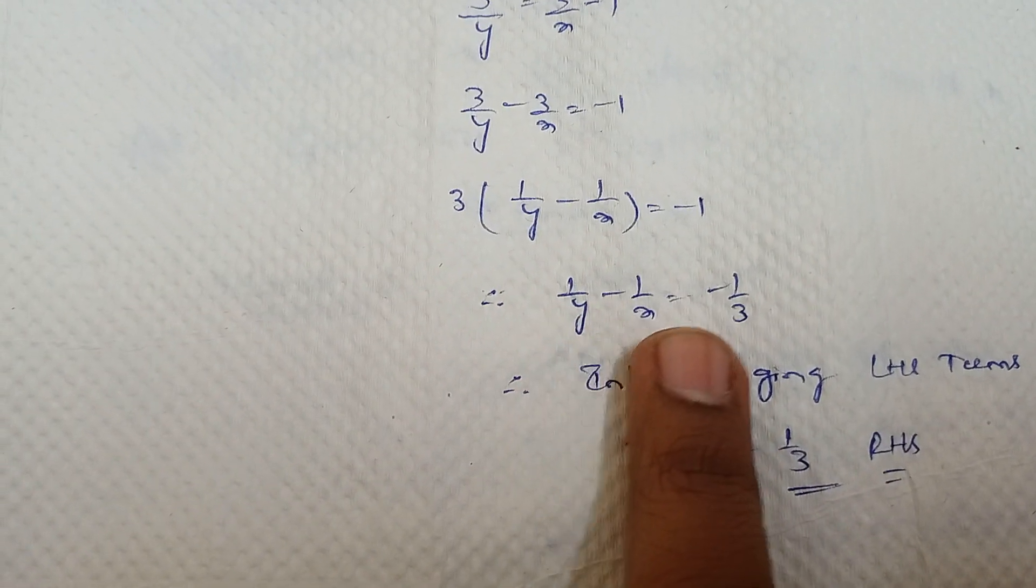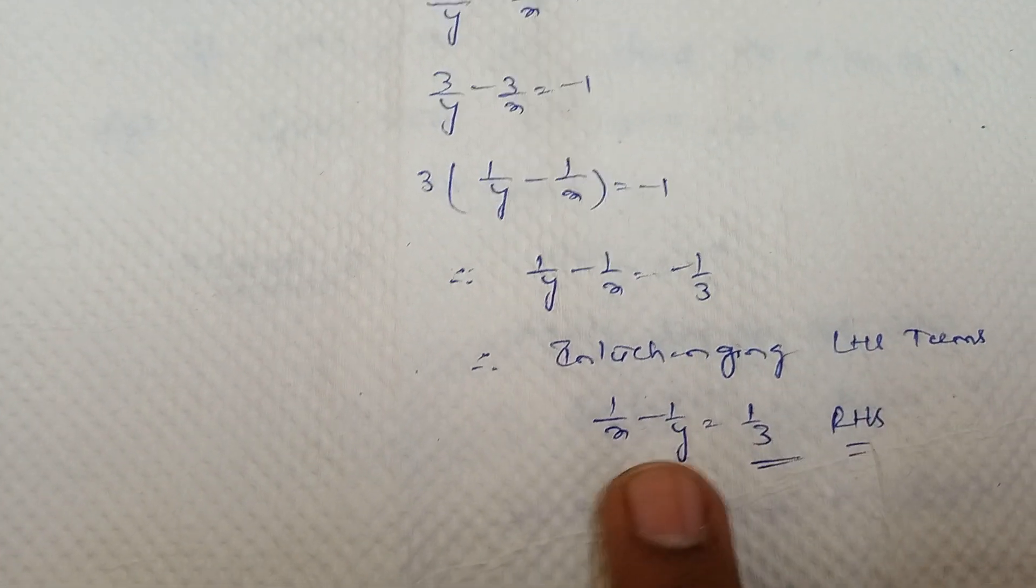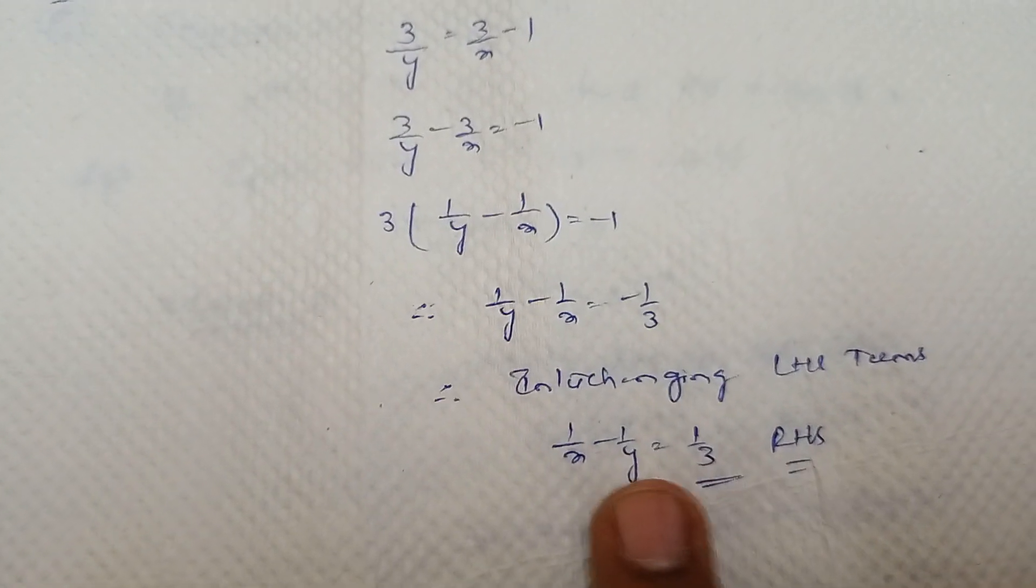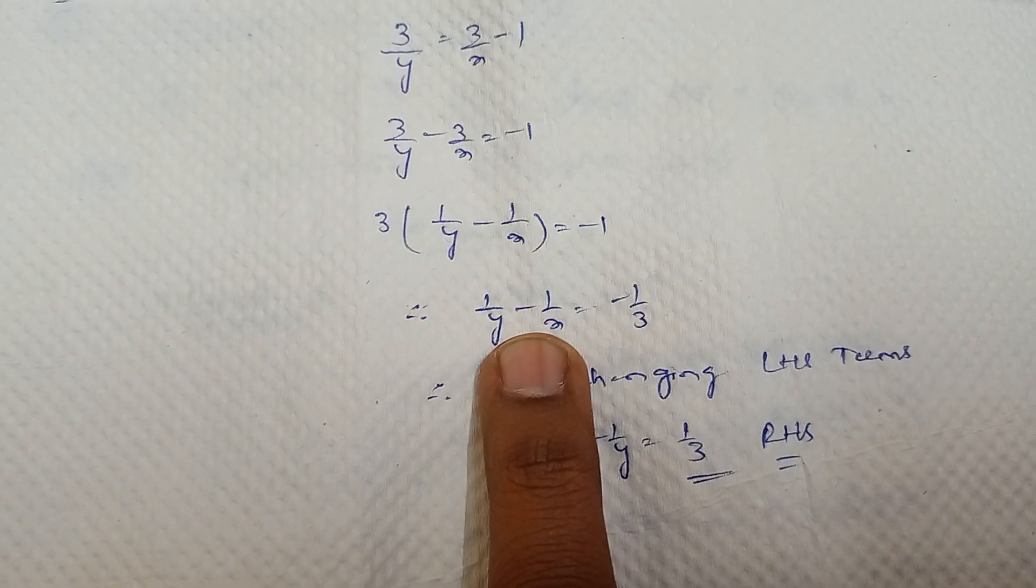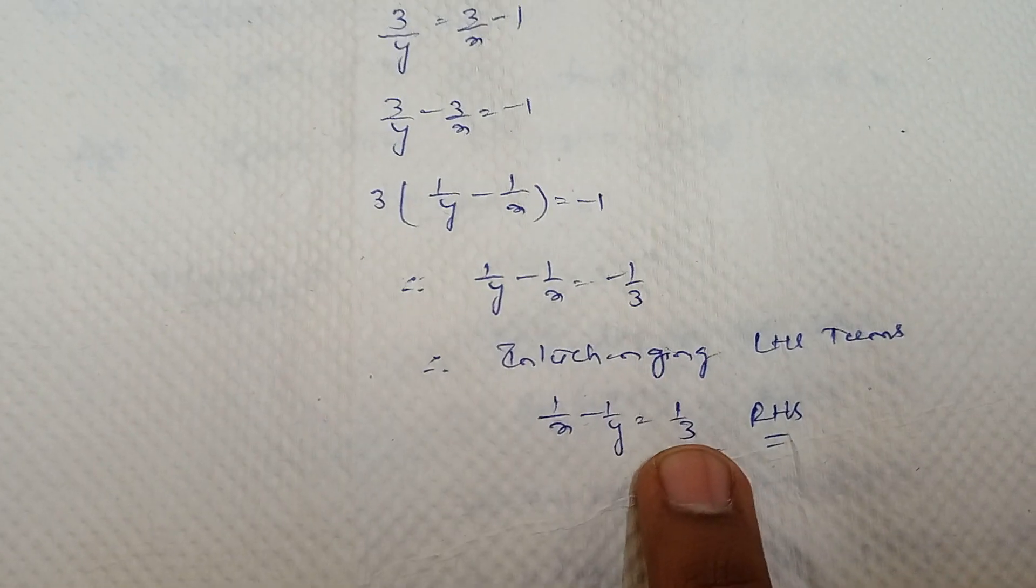So 1 by y minus 1 by x equal to minus 1 by 3. But interchanging the LHS terms, we get 1 by x minus 1 by y equal to 1 by 3. That equal to RHS. We need to prove this one. Here we got interchange. The terms are different here. We can interchange. Then the signs will be different here. So we get 1 by 3 as a result.